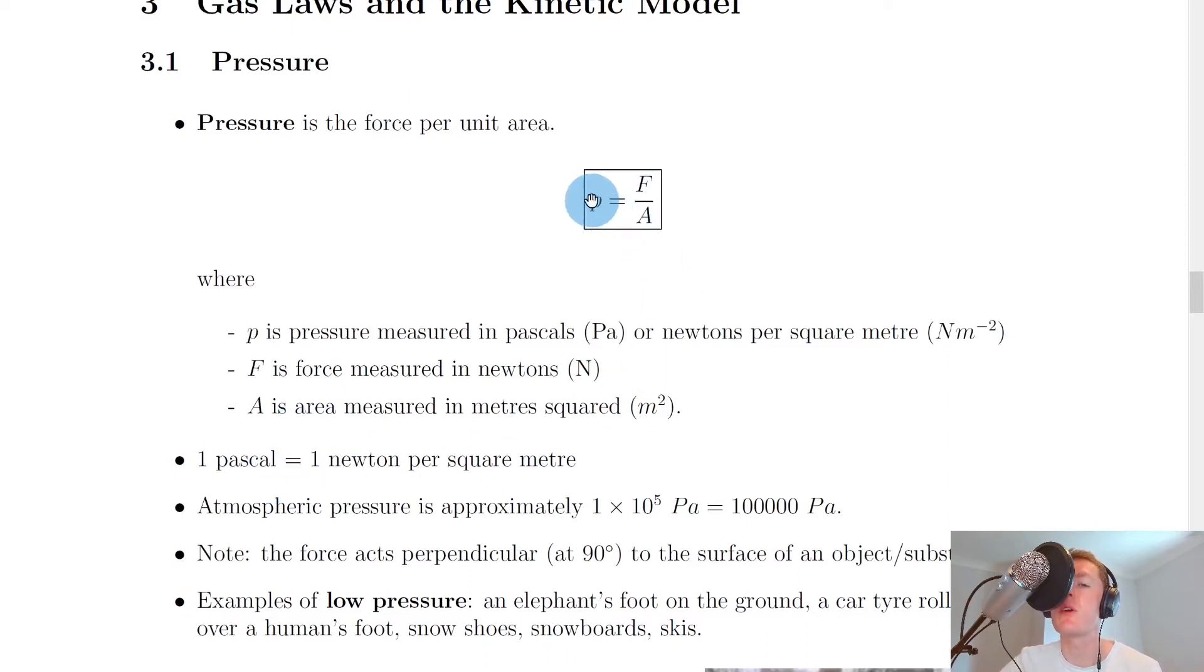And you can see that because on the left hand side pressure is measured in pascals, and this is equal to force, which is measured in newtons, divided by area, which is in metres squared. So we could say that one pascal on this side is equal to one newton divided by metres squared, or one newton per square metre.